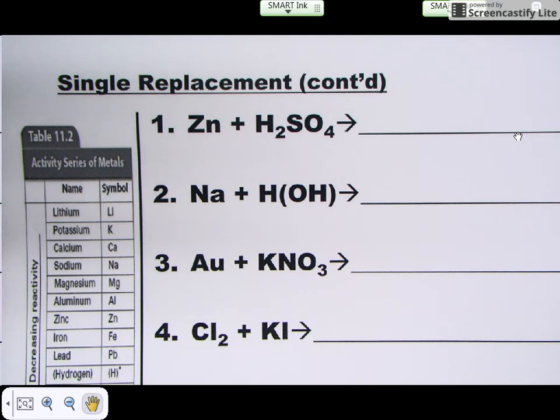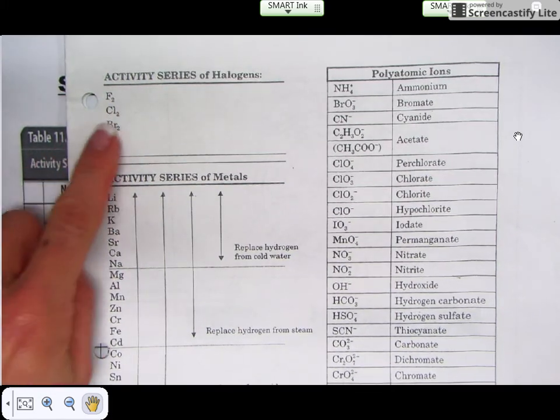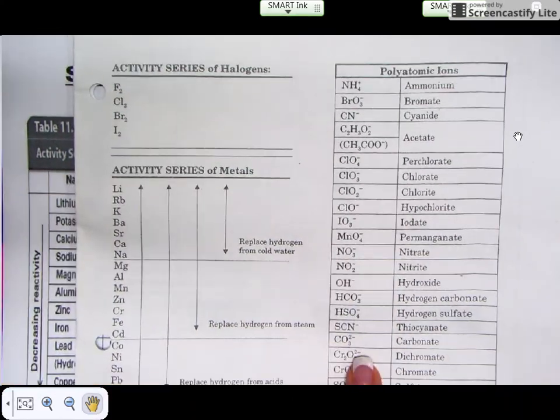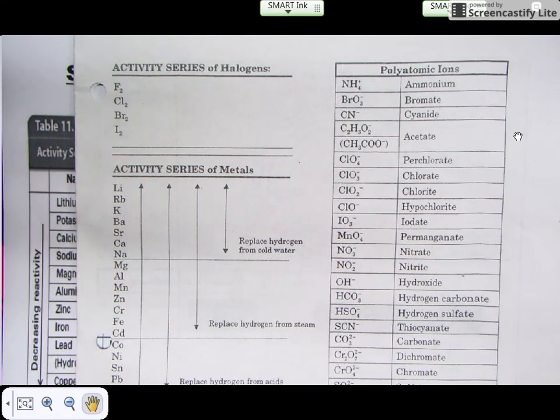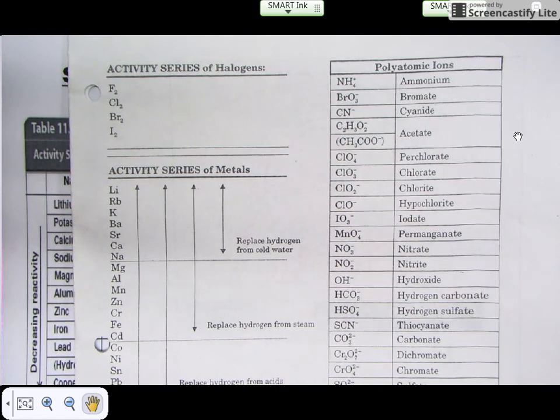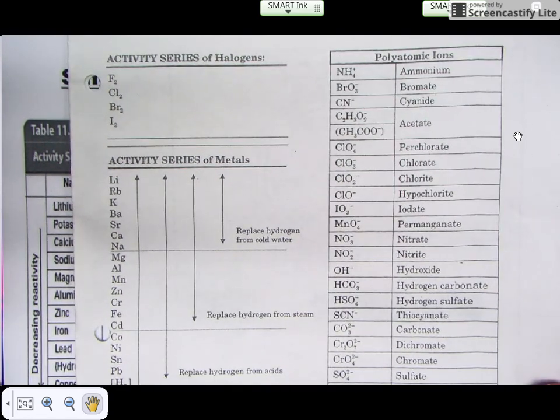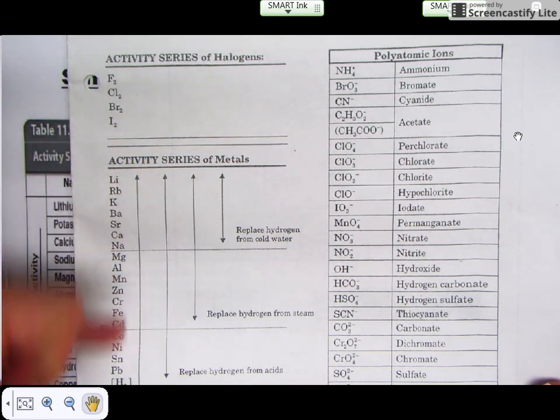With a single replacement reaction, one thing that you have to make sure you always do is consult your activity series. In your reference tables, your activity series is found next to your polyatomic ion list. Notice you have an activity series of the halogens and activity series of your metals. The way that this works is an element can replace a similar element as long as it is listed below it on the chart.